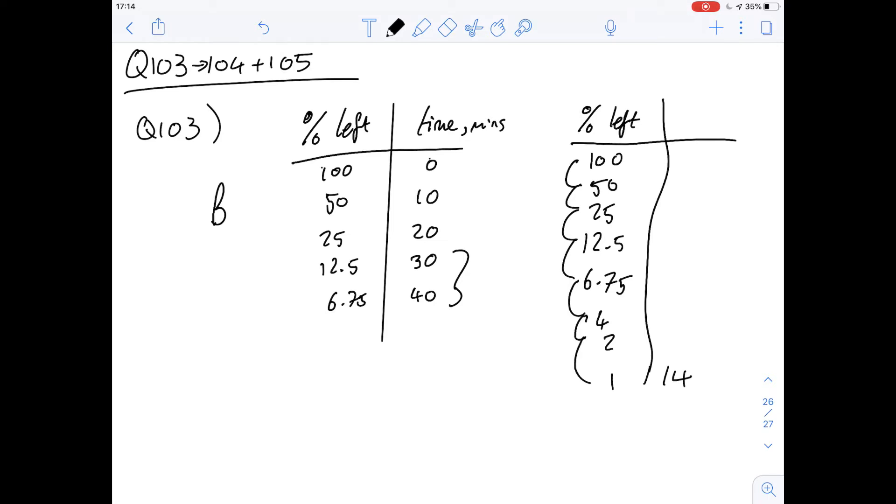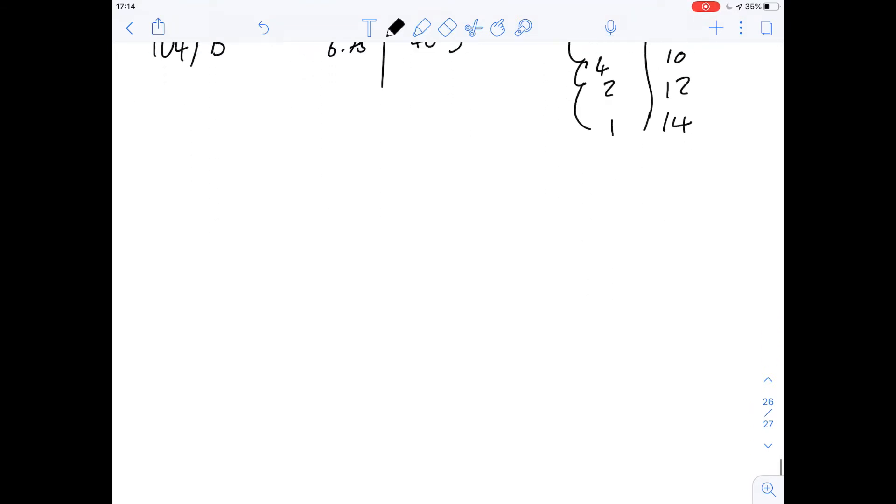So then if this whole process takes 14 hours, how many sort of half things happen? We've got 1, 2, 3, 4, 5, 6, 7. So if it's halved 7 times in 14 hours, then each one has to be 2 hours. So the half-life would be 2 hours. That gives us an answer for 104 of B as well.